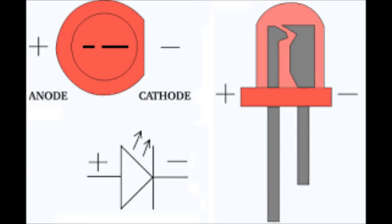LED has an anode and cathode. We will connect the red wire to the anode and the black wire to the cathode. When the anode is connected to the positive pole and the cathode is connected to the negative pole, the light will blink.